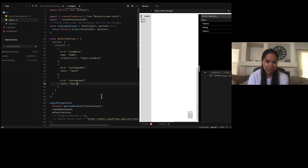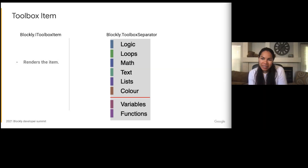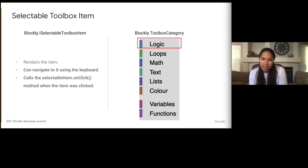That was a basic overview of how to create a custom toolbox item. There are a few different types of toolbox items that are supported. For items that don't need to be interacted with, you can simply extend the ToolboxItem class like we did in the demo — the best example of this in core is the toolbox separator, which is the line between the color and variable categories. The second kind is a selectable toolbox item: these are items a user needs to interact with. The toolbox will render these items, select them when a user navigates the toolbox with the keyboard, and call the onClick method when clicked. You can create one by implementing the ISelectableToolboxItem interface and returning true from the isSelectable method.